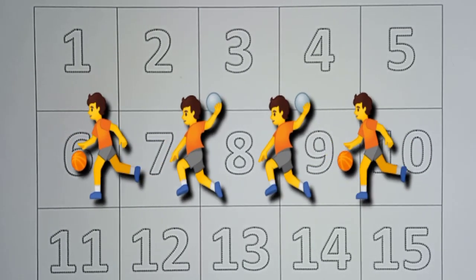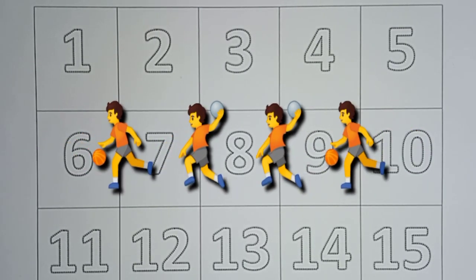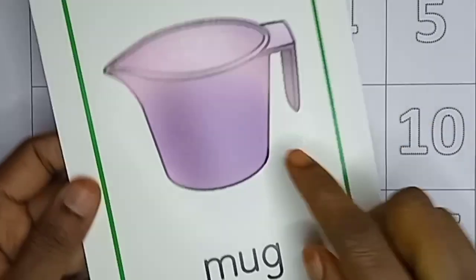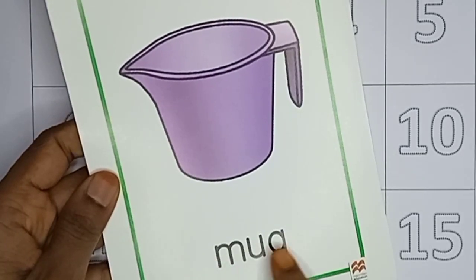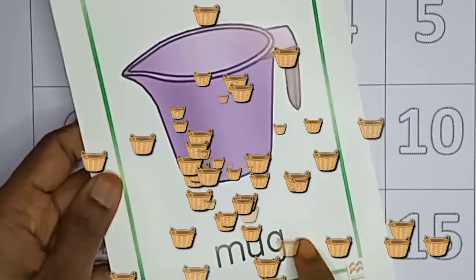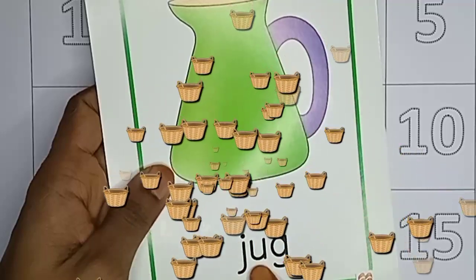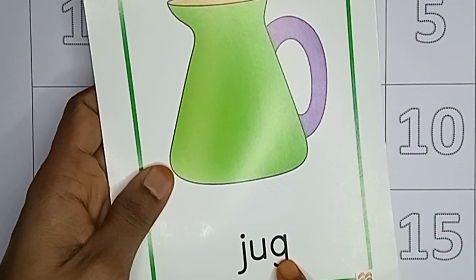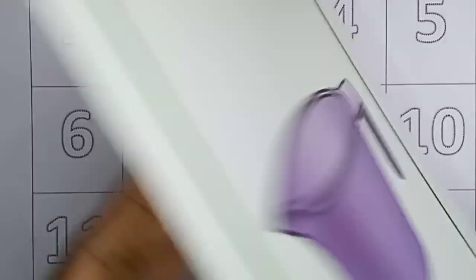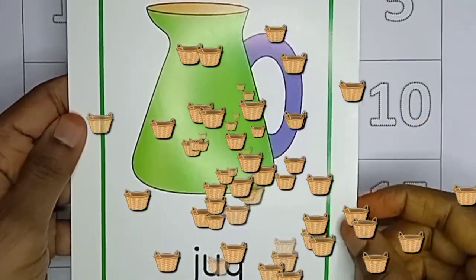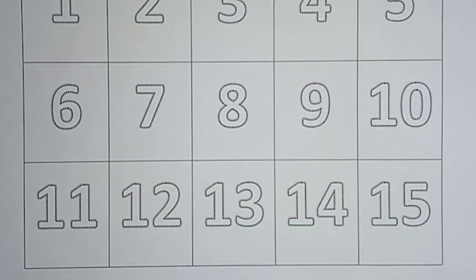Hello children. What is it? This is mug. M-U-G. Mug. This is jug. J-U-G. Mug and jug. These are rhyming words.